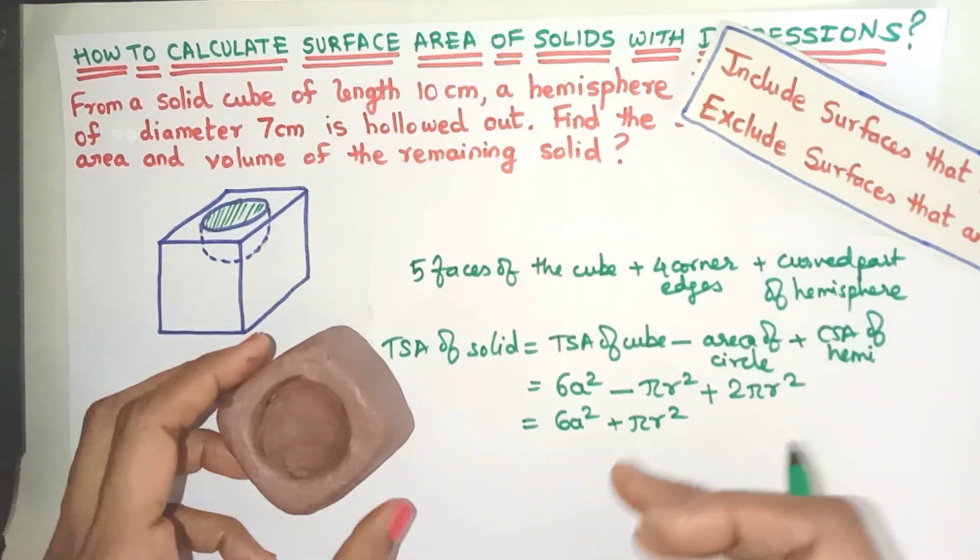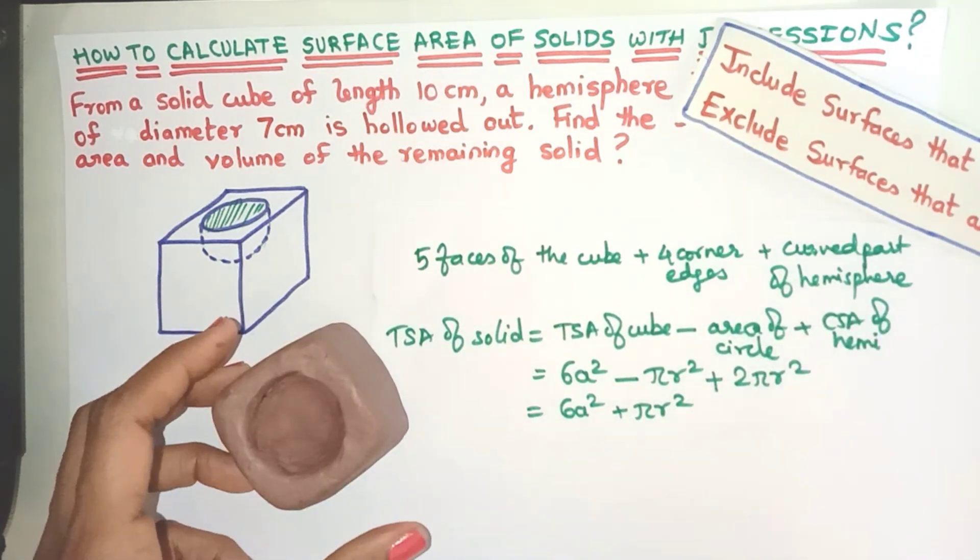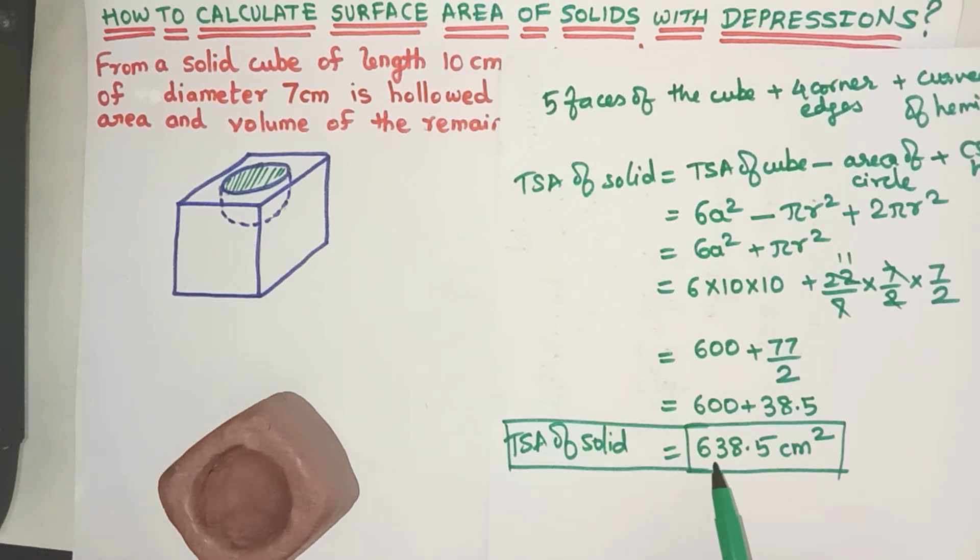I think nothing else can be done. Let's substitute the values and do the calculations. So friends, the surface area of the solid comes out to be 638.5 centimeter square. You can just check out the calculations.